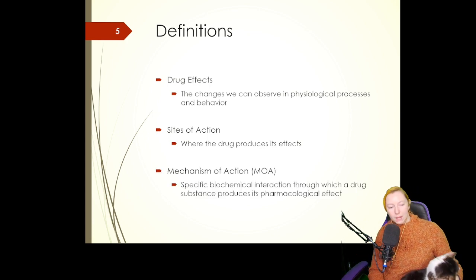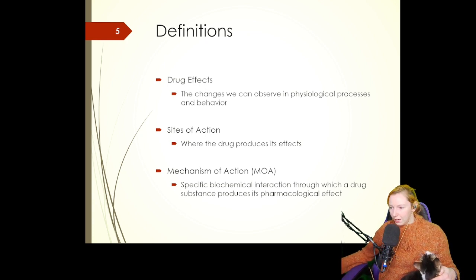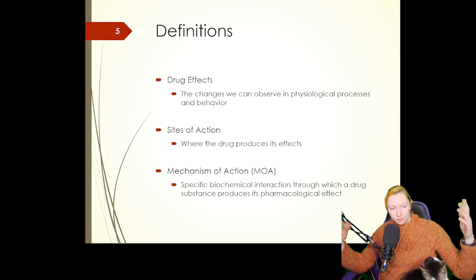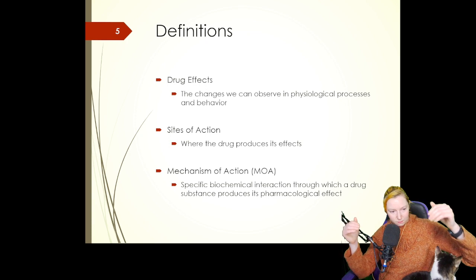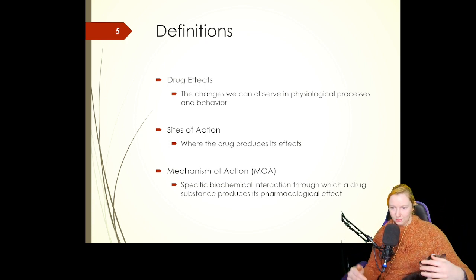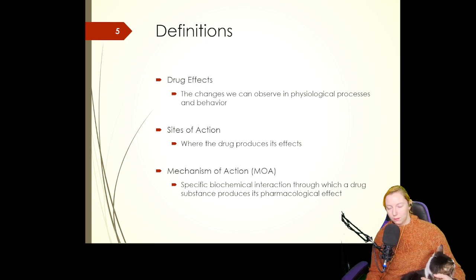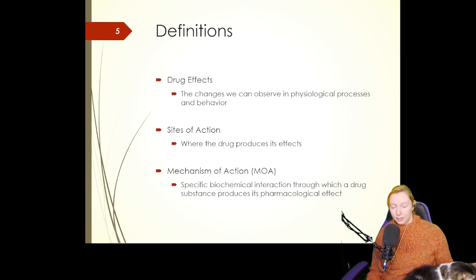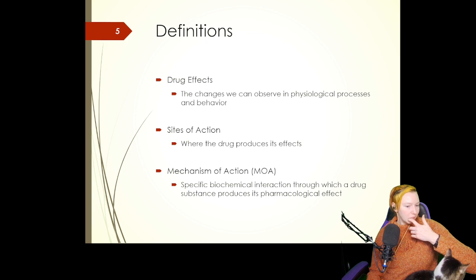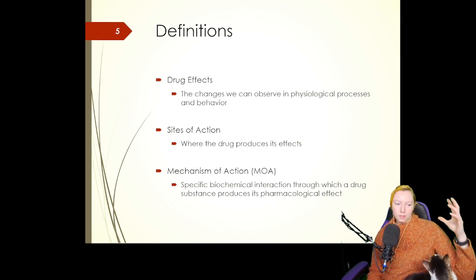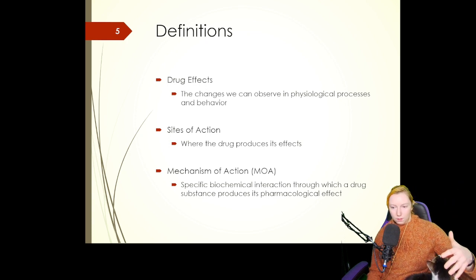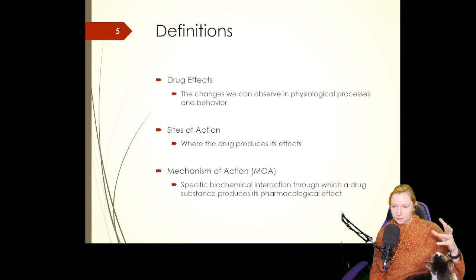We also have to take into consideration the mechanism. The mechanism of action looks at how the drug does the thing — the biochemical interactions that a drug engages in to produce a pharmacological effect. For example, propranolol is a medication for high blood pressure — it's a beta blocker. Beta blockers go through the bloodstream, get to the heart, and block receptors called beta receptors. That's the mechanism of action, and that's why they're called beta blockers.